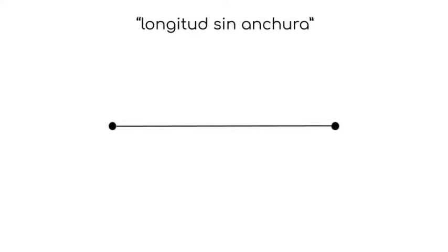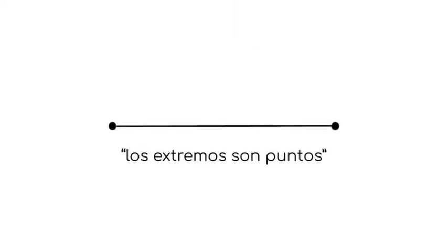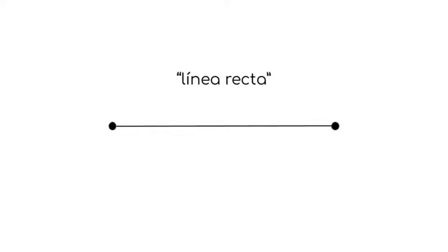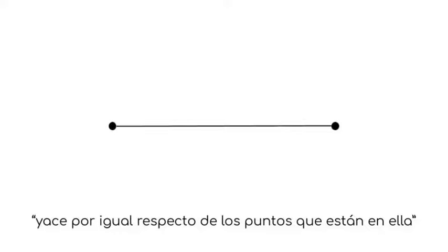Según Euclides, una línea es una longitud sin anchura. Los extremos de una línea son puntos. Una línea recta es aquella que yace por igual respecto de los puntos que están en ella.